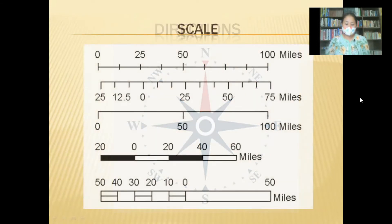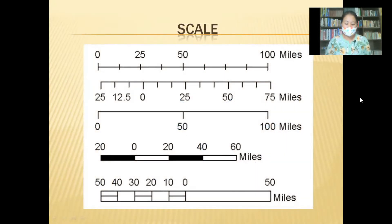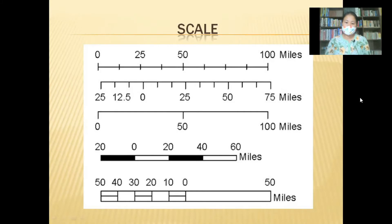The scale of a map is the ratio between distances shown on a map to the actual distance on the ground. For example, the actual distance between two cities may be 100 kilometers, but on a map it may be shown as one centimeter. Then the scale of the map is one centimeter equal to 100 kilometers.